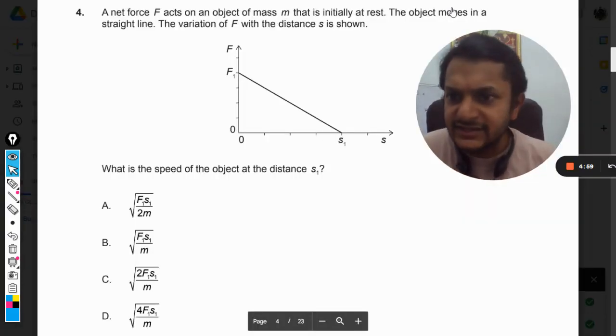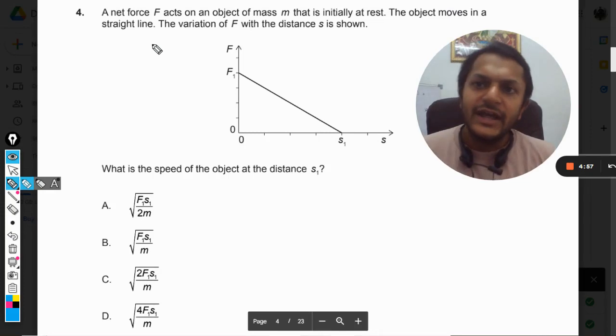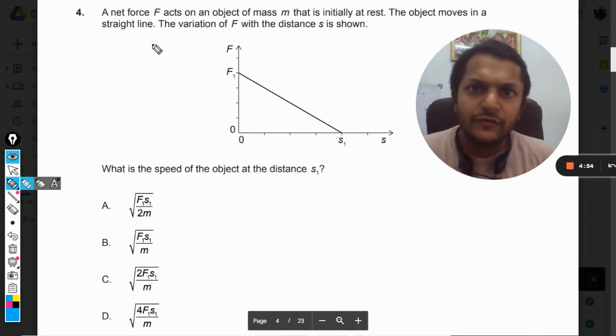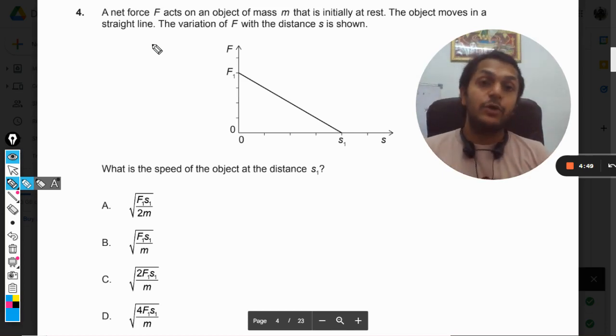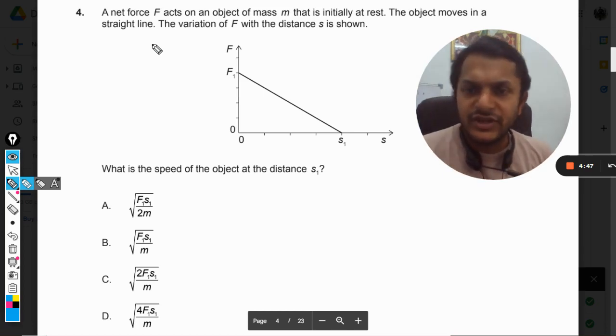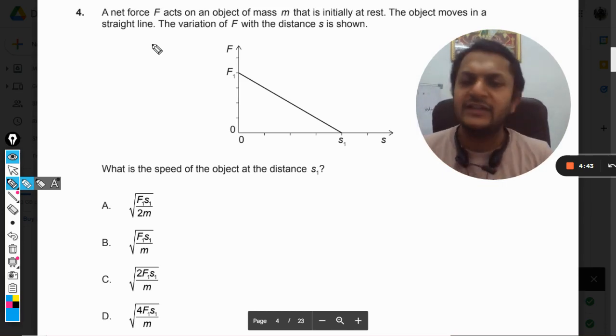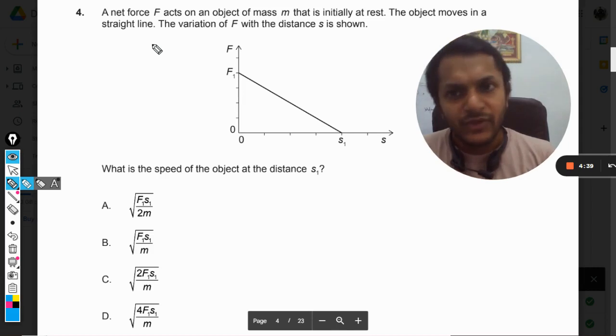Okay dear students, let us see what is there in this question. A net force F_x acts on an object of mass m that is initially at rest. Very important - the object moves in a straight line. The variation of F with the distance s is shown, so the force is a variable force. We can't use the formulas for work directly; we have to do something innovative here.